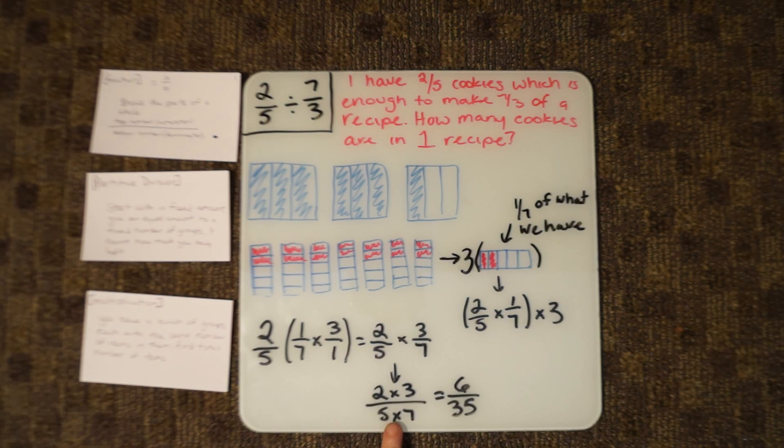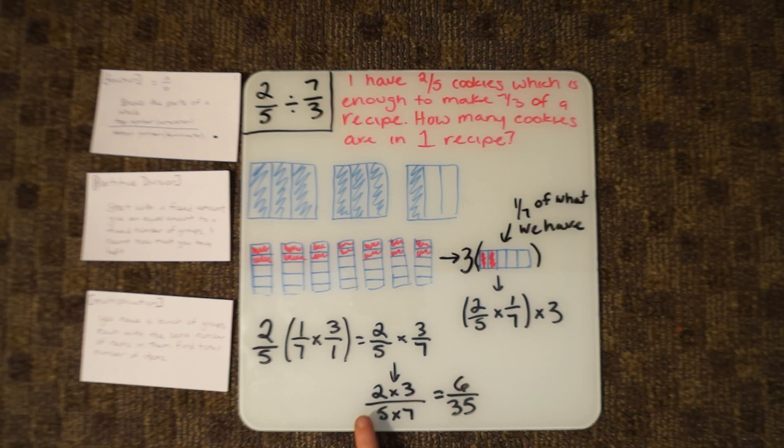Now we can do 2 times 3, which equals 6, and 5 times 7, which equals 35.